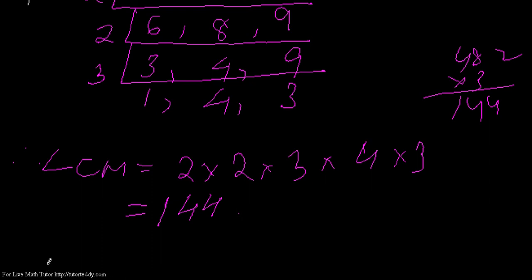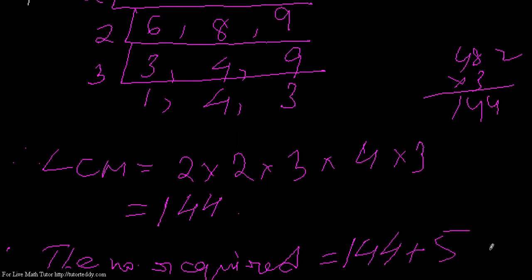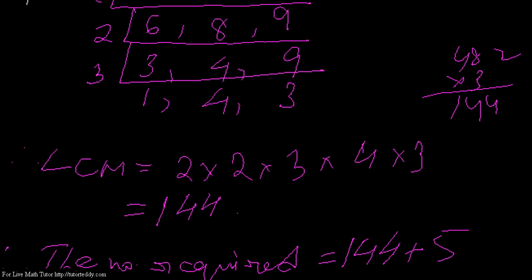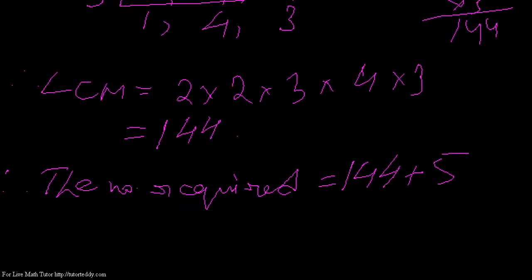So the number required—because it said there will be a remainder of five—the number required equals one forty-four plus five. We just add the remainder which will remain. That means five plus four is nine, then four, then one. That means one forty-nine is the required number.